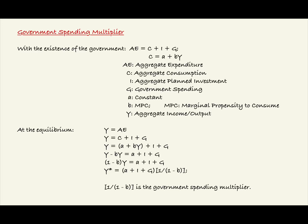In this video, we're going to look at the government spending multiplier. With the existence of the government, AE equals C plus I plus G, and C equals A plus BY.